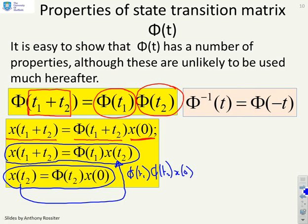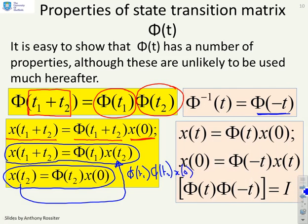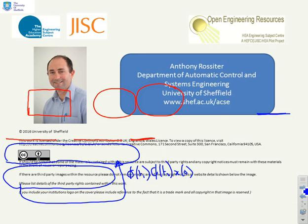Now in a similar way, you can show that the inverse of phi of t is equal to changing the sign of the argument, so it's equal to phi of minus t. And you can use a similar sort of proof here. So I'm not going to dwell on it. Again, pause the video if you want to look at that box more slowly.